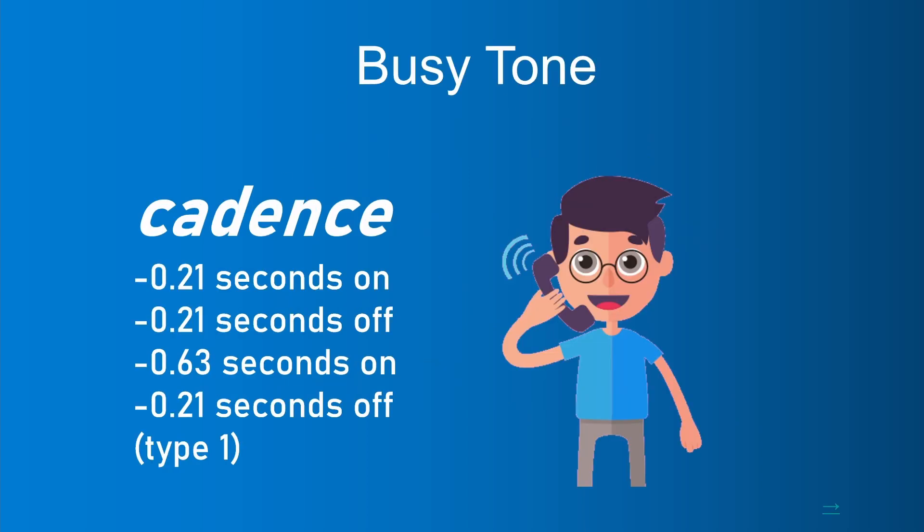Busy tone is a series of sharp buzzing tones heard over a telephone when the line dialed is already in use. When call hang-up fails, the line is still occupied after receiving the busy tone signal.